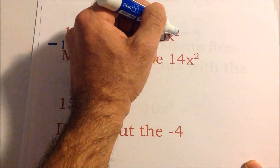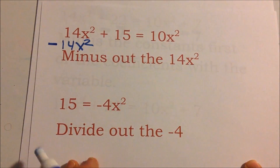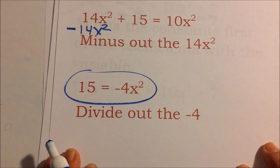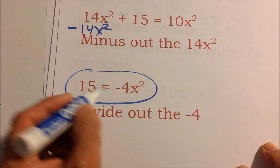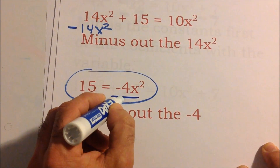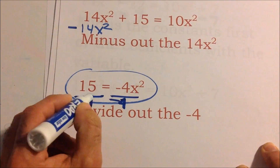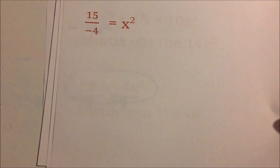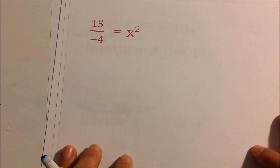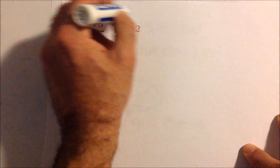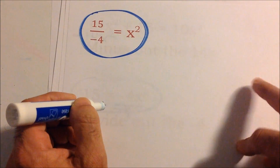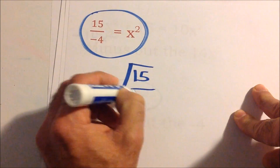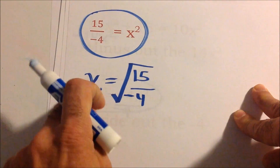Even though we know this isn't linear because of x squared, we subtract 14 from both sides. Then we divide out the negative 4 — doing the opposite operation on both sides — and we find that 15 over negative 4 equals x squared. To find x, just take the square root of 15 over negative 4.